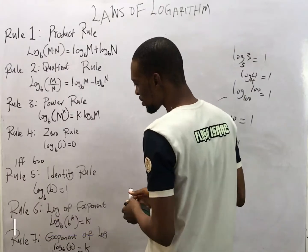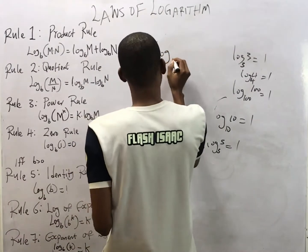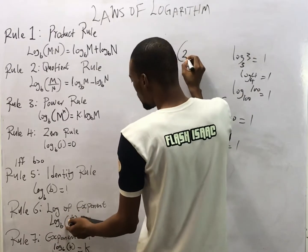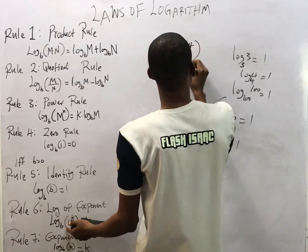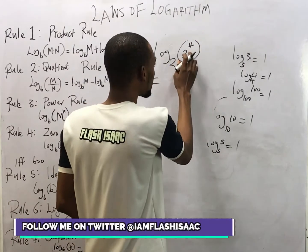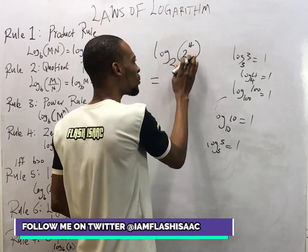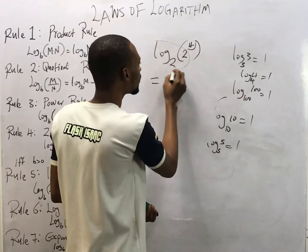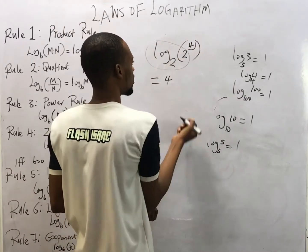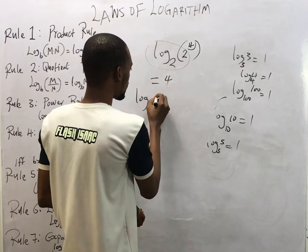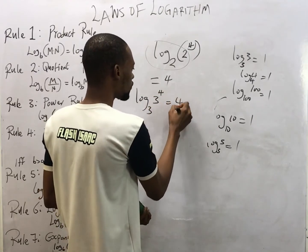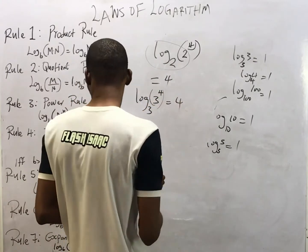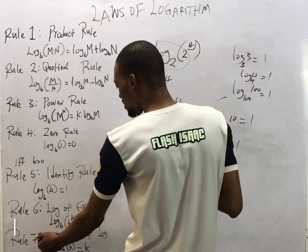The sixth rule is the log of exponents. If you have log base 2 of (2 to the power of 4) — where the base of the log and the base of the exponent are the same — you simply bring down the power as your answer. So log base 2 of 2⁴ equals 4. The power is your answer whenever the log base and the number's base match.